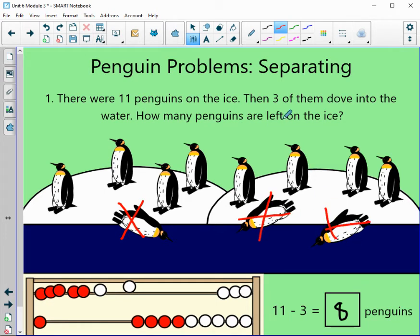And then we can cross out these 3 that jumped in the water. So when we count our total, we don't need to count those. Let's count how many we see. 1, 2, 3, 4, 5, 6, 7, and 8 was our answer.